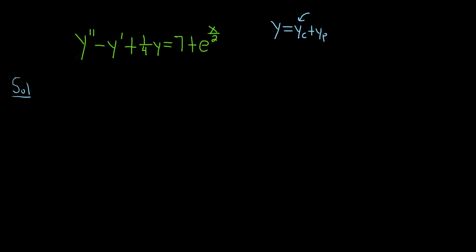To find y sub c, we basically pretend that our DE is equal to 0 and write down the characteristic equation. To write down the characteristic equation, you look at the order of the derivative. Here it's the second derivative, so m squared, then minus the first derivative, so m to the 1. And this is the 0th derivative, so m to the 0 — you just write down the number — and set this equal to 0.